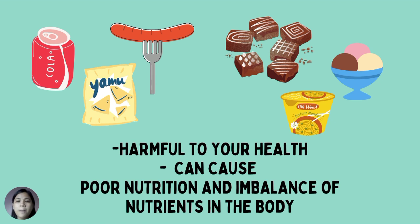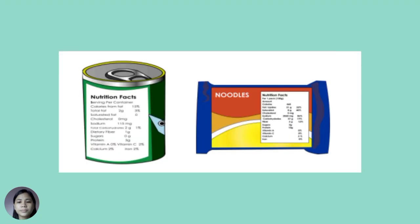Excessive intake of soft drinks and processed foods like hot dogs, sweet and salty foods like ice creams and noodles are harmful to your health. They can cause poor nutrition and imbalance of nutrients in the body. Let us examine the label of sardines and noodles. The label shows the presence of sodium. Salt or sodium chloride is common in processed foods. If taken in excess, this may accumulate in your organs and may damage your kidney.